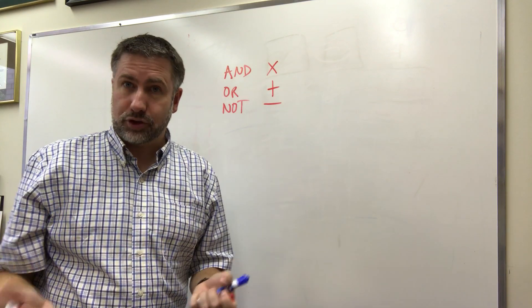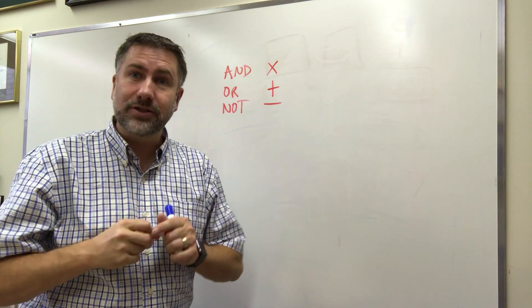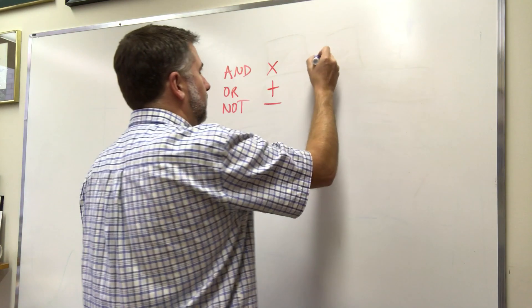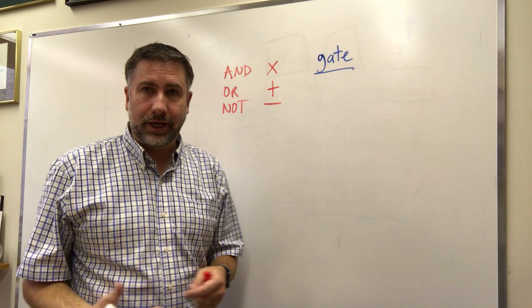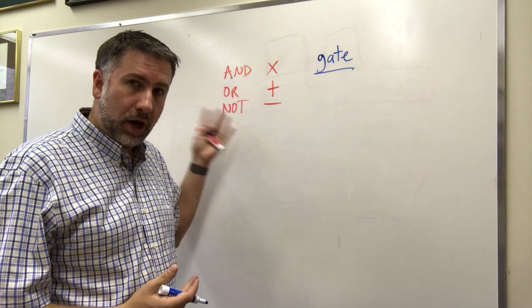We're gonna have a graphical shorthand for AND, OR, and NOT and these are going to be what we call gates. A gate is just a graphical shorthand for this logical operation.